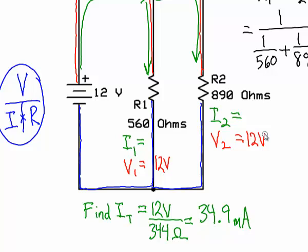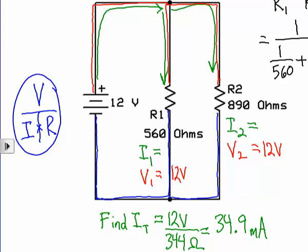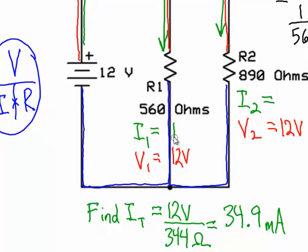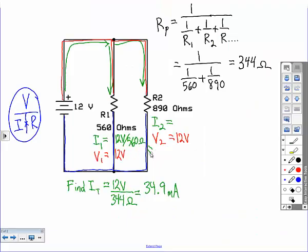So now that we know the voltage drops in each branch, we can calculate the current in each branch because we have Ohm's Law. So we'll solve current in branch one first. To solve current, it's voltage divided by resistance. So we're going to take the 12 volts, divide that by, this time, 560 ohms, which ends up being 21.4 milliamps.